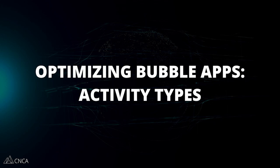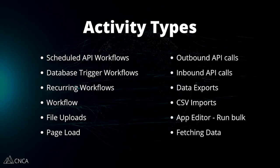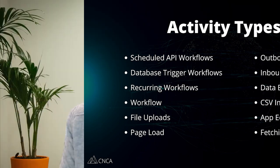Let's dive into the key areas you want to focus on to optimize your app's workload. We're going to start with activity types. Activity types are essentially categories of possible activities that your app can experience. Each of these raw activities has a base workload unit cost, and it's important to understand that most app operations are a combination of several activities with varying degrees of complexity. So the more complex, the more workload units you're going to need.